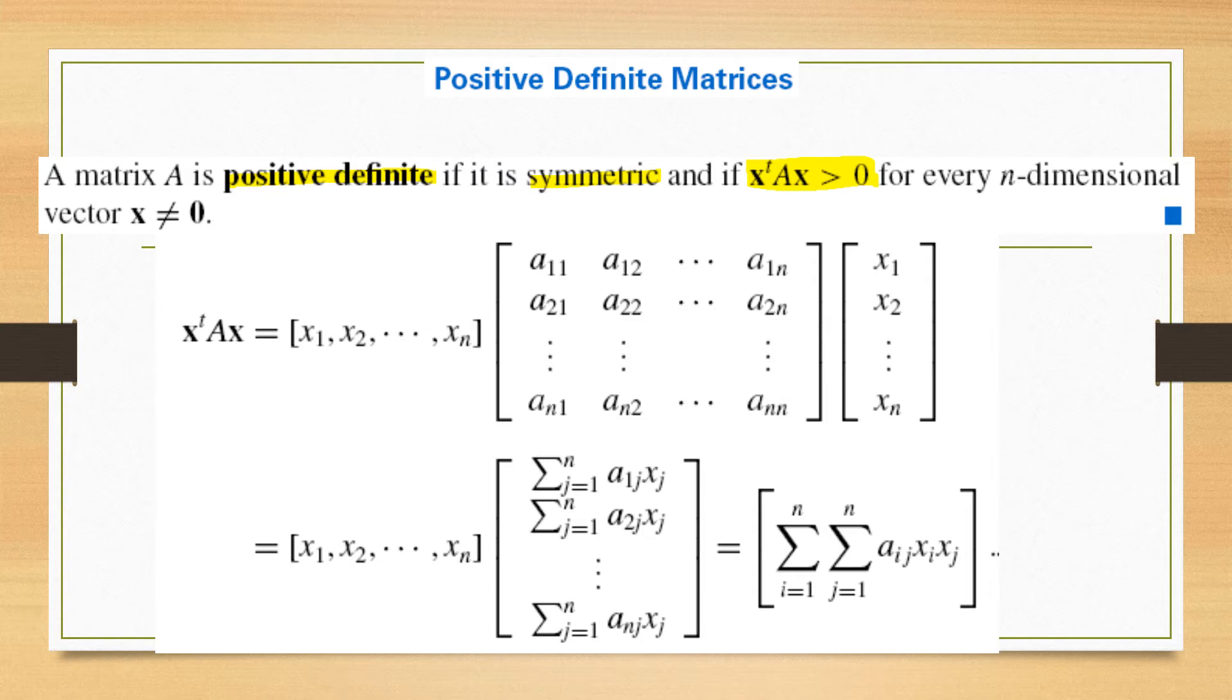Now we consider X transpose AX. X vector is mentioned here. This is the X vector while this is the transpose of the vector X.